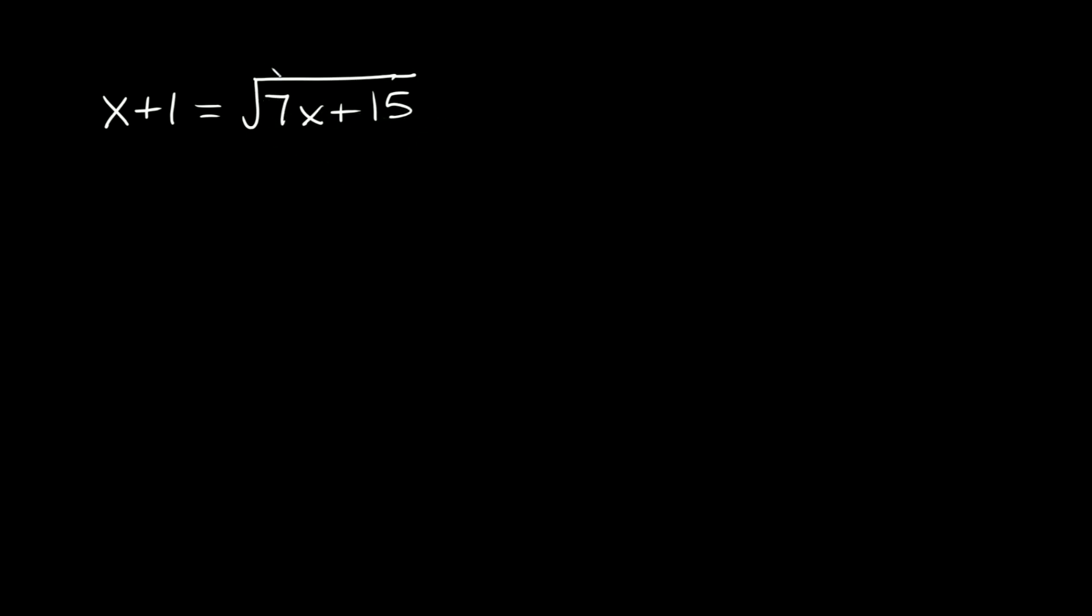So the first thing we can do is get rid of this radical, get rid of the square root sign. So how do you do that? Well all you have to do is, since we have a square root, we just have to square it. If we had a cube root, we would cube this. If it was a fourth root, we would raise it to the fourth power. That's how you get rid of these radicals.